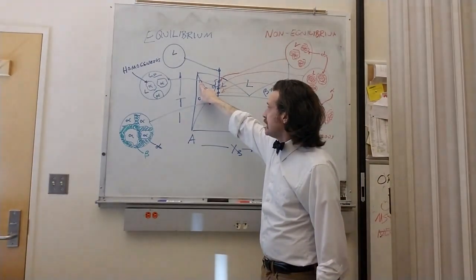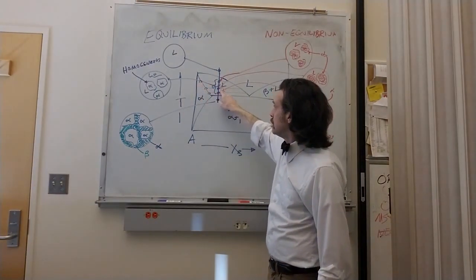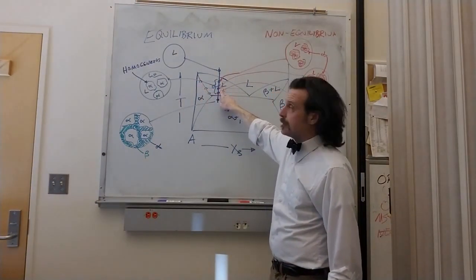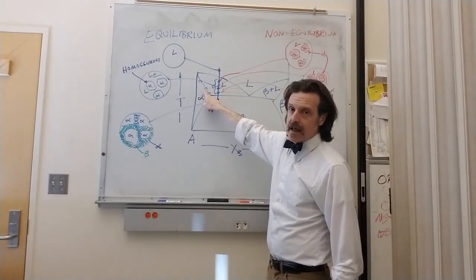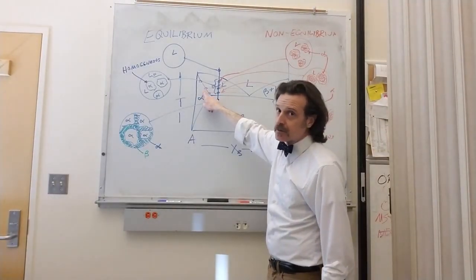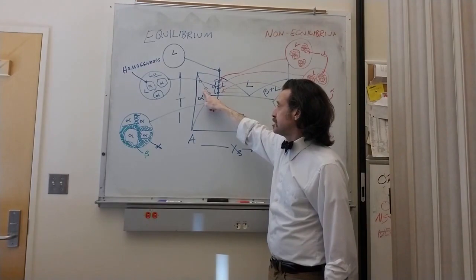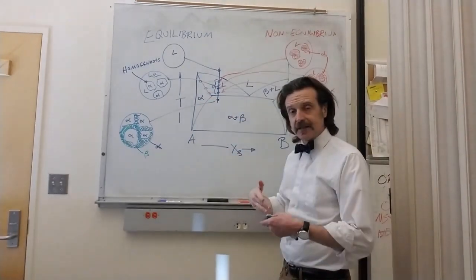As we cool to a lower temperature, the predicted equilibrium composition of alpha is actually a little bit less A-rich.